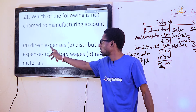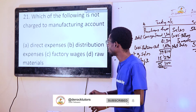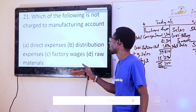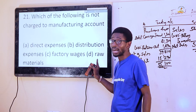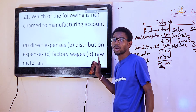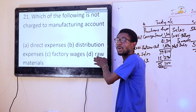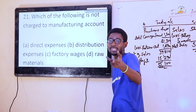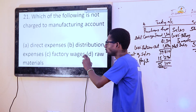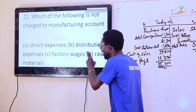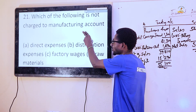Option D is charged when you want to get your prime cost, which includes direct expenses. Factory overheads, direct expenses, and raw materials are used when you want to get your prime cost. Option D, which is raw materials, is also called direct material. So option A and option D are used to get prime cost, which is under professional accounts.